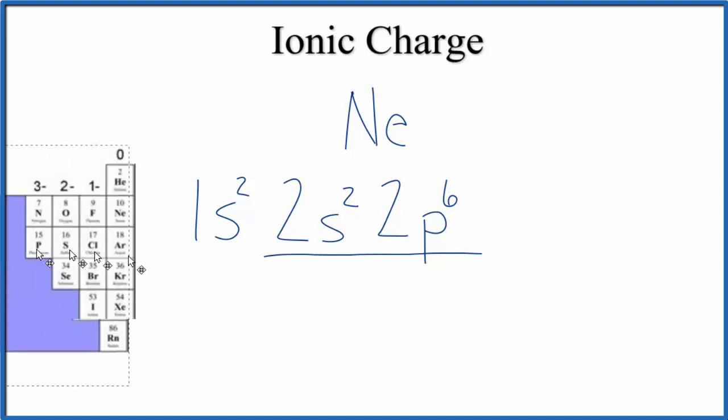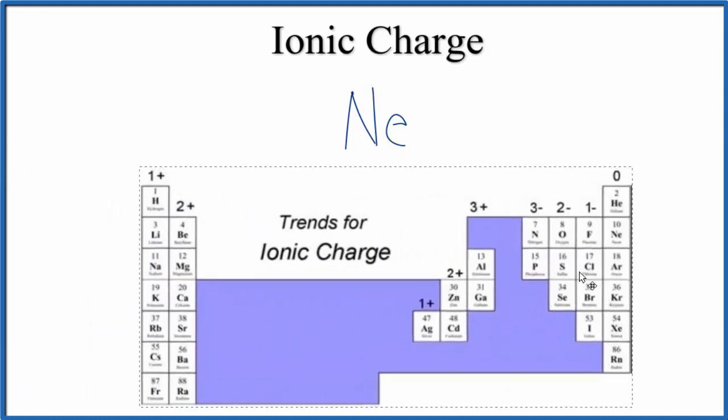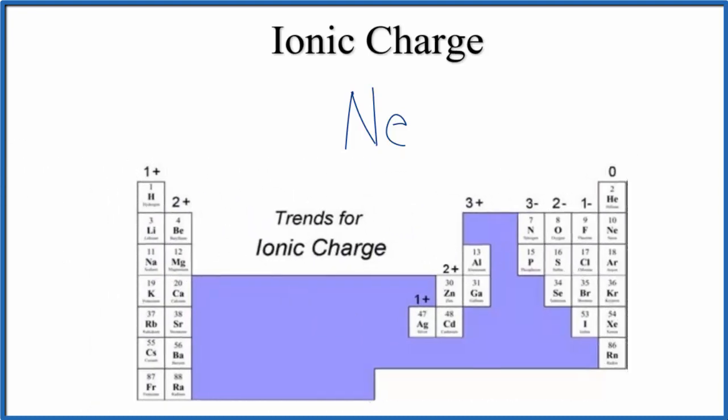Whether you use the periodic table or electron configurations to find the ionic charge for Neon, it has an ionic charge of 0—we say it doesn't have a charge. This is Dr. B with the ionic charge for Neon. Thanks for watching.